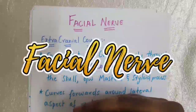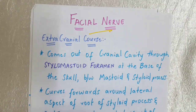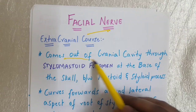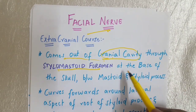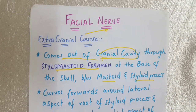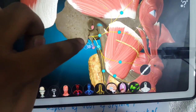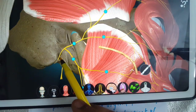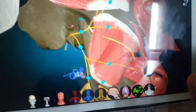Welcome to the channel. In this video we will be discussing the extracranial course of the facial nerve. The facial nerve comes out of the cranial cavity through the stylomastoid foramen at the base of the skull, between the mastoid and the styloid process. In the 3D anatomy, here is the facial nerve and here is the stylomastoid foramen.